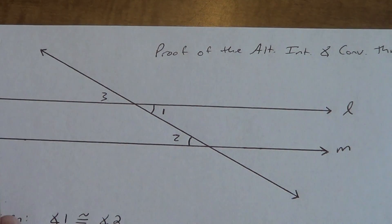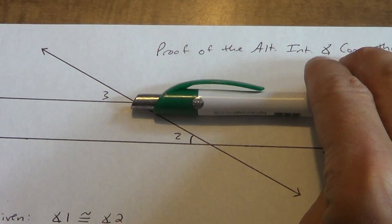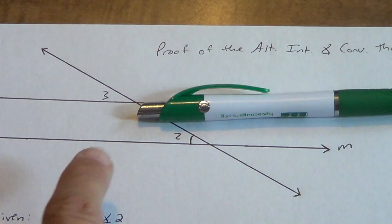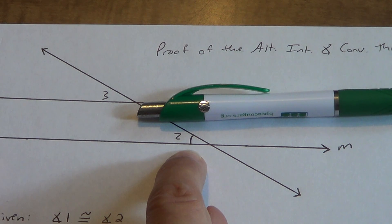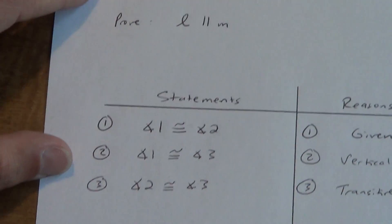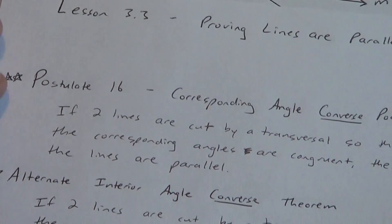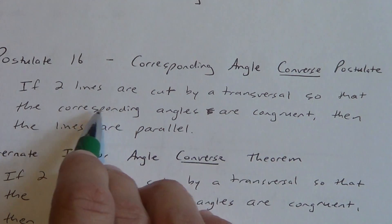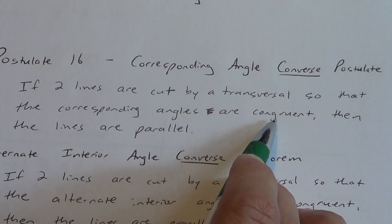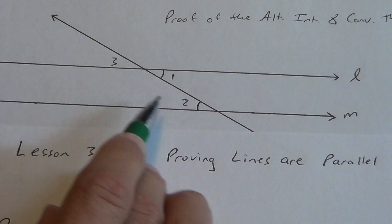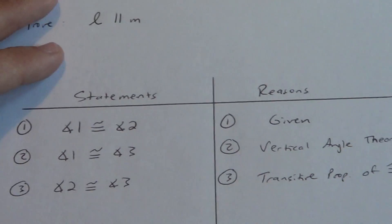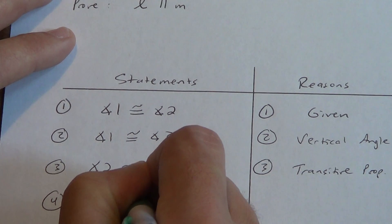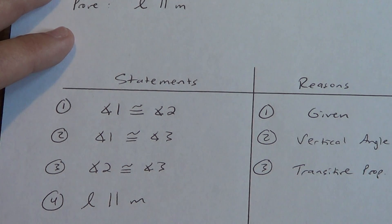Let's go back up and look at the picture. Angles 2 and 3 — I don't even need angle 1 now. What kind of angles are 2 and 3? Angle 3 is at the top left, angle 2 is also at the top left, so those are in the same position. What does 'in the same position' mean? Hopefully you remember that's corresponding angles. If two lines are cut by a transversal so that the corresponding angles are congruent — that's what we have — then the lines are parallel. So we can say L is parallel to M.